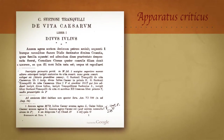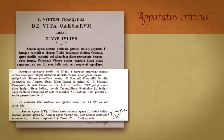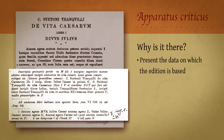The apparatus criticus is the stuff at the bottom of the page. Why is it there? Well, it's there basically to present the data on which the edition is based, and we do that to accomplish two goals.